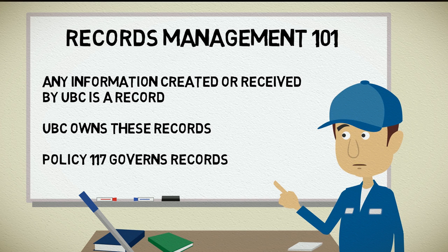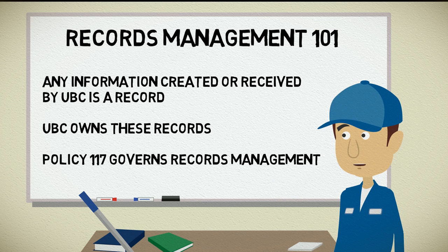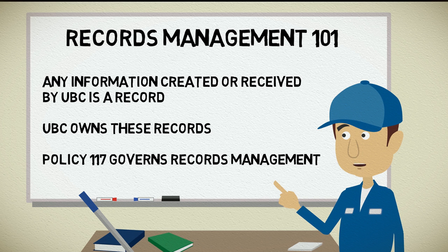All records are the property of UBC, and Policy 117 governs how records are managed, including creating, storing, and disposing of records.